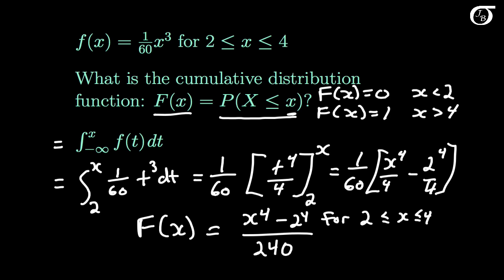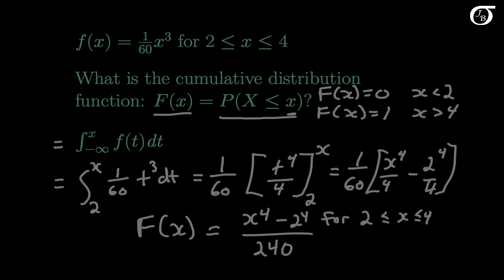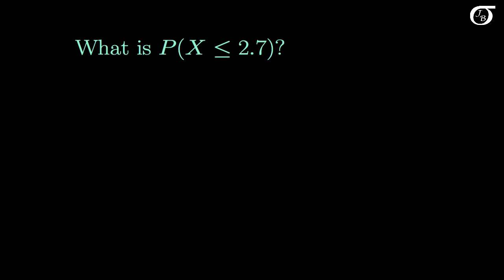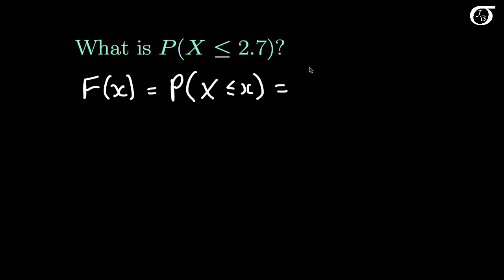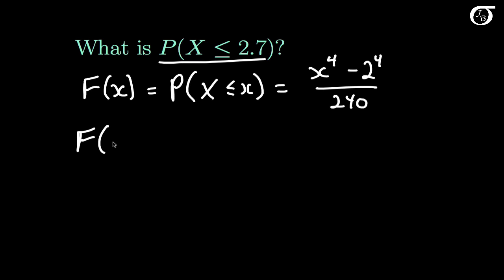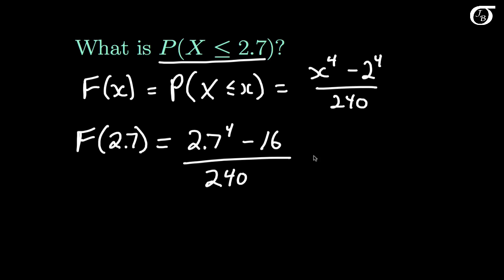We can use this cumulative distribution function to help find probabilities. What is the probability the random variable x takes on a value less than or equal to 2.7? We could carry out the integration again, but we can also use our CDF F(x) = (x to the fourth minus 16) over 240. So the probability that x is less than or equal to 2.7 is just F(2.7), which equals (2.7 to the fourth minus 16) over 240, approximately 0.155.